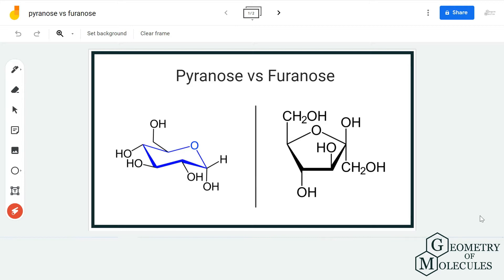In pyranose we have a hexagonal structure in which we have five carbon atoms and one oxygen atom. What you see over here is the oxygen atom and all these points represent the carbon atoms. So it has a hexagonal structure with five carbon atoms and one oxygen atom, and this ring structure is present in the most commonly used sugar which is glucose.